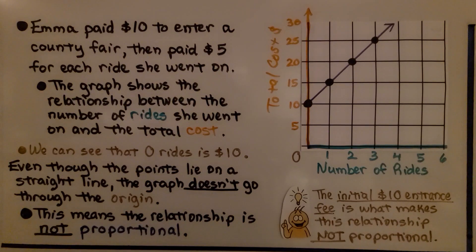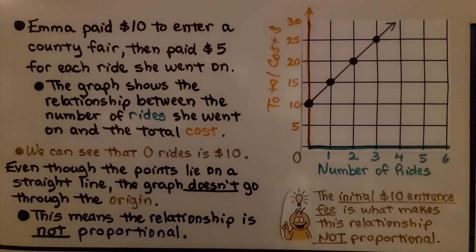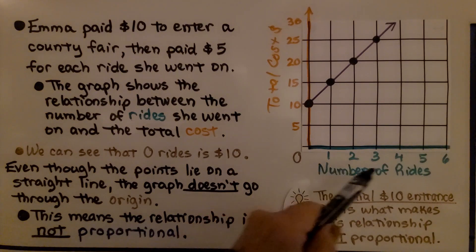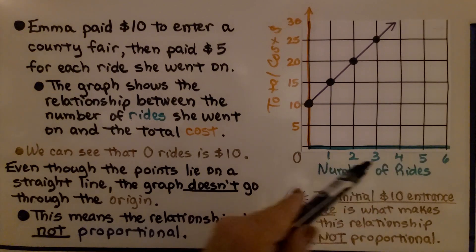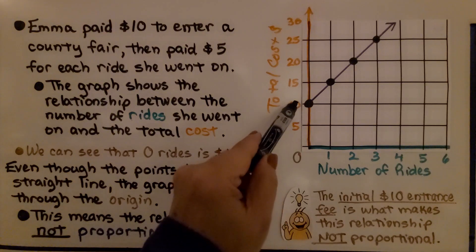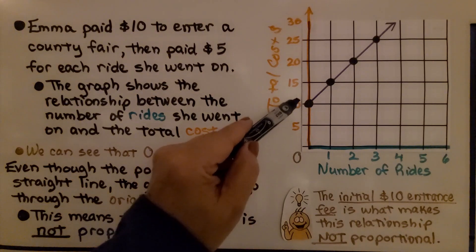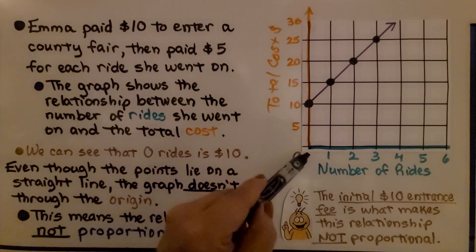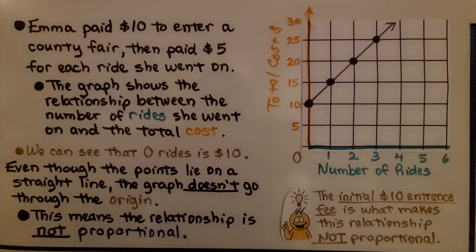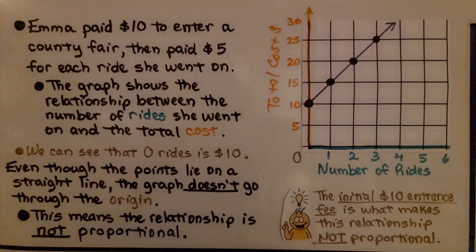Emma paid $10 to enter a county fair, then paid $5 for each ride she went on. The graph shows the relationship between the number of rides and the total cost. The initial $10 entrance fee is what makes this relationship not proportional. Because of that $10 initial fee, it's not going through the origin. Even though the points lie on a straight line, the graph doesn't go through the origin. This means the relationship is not proportional.